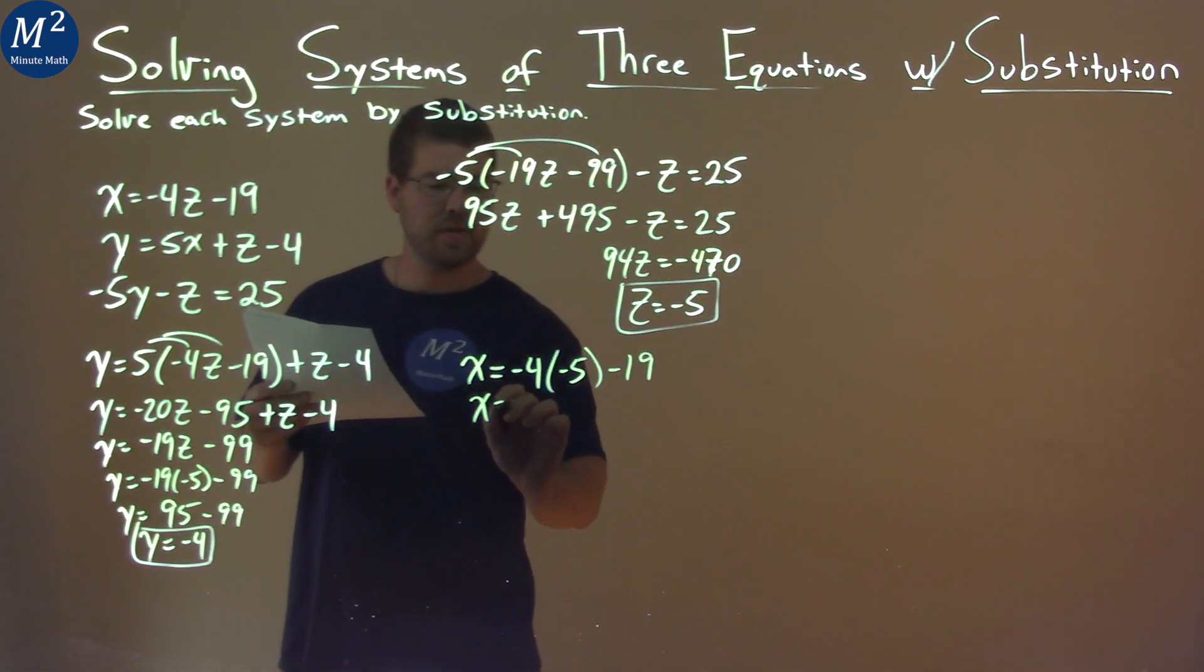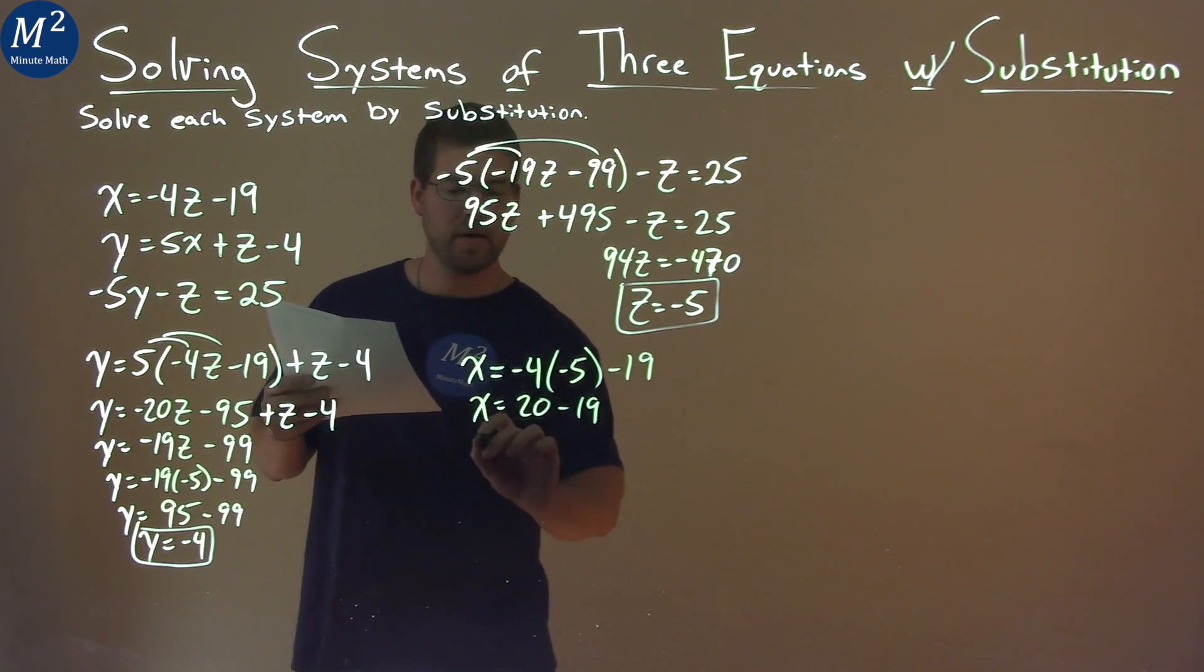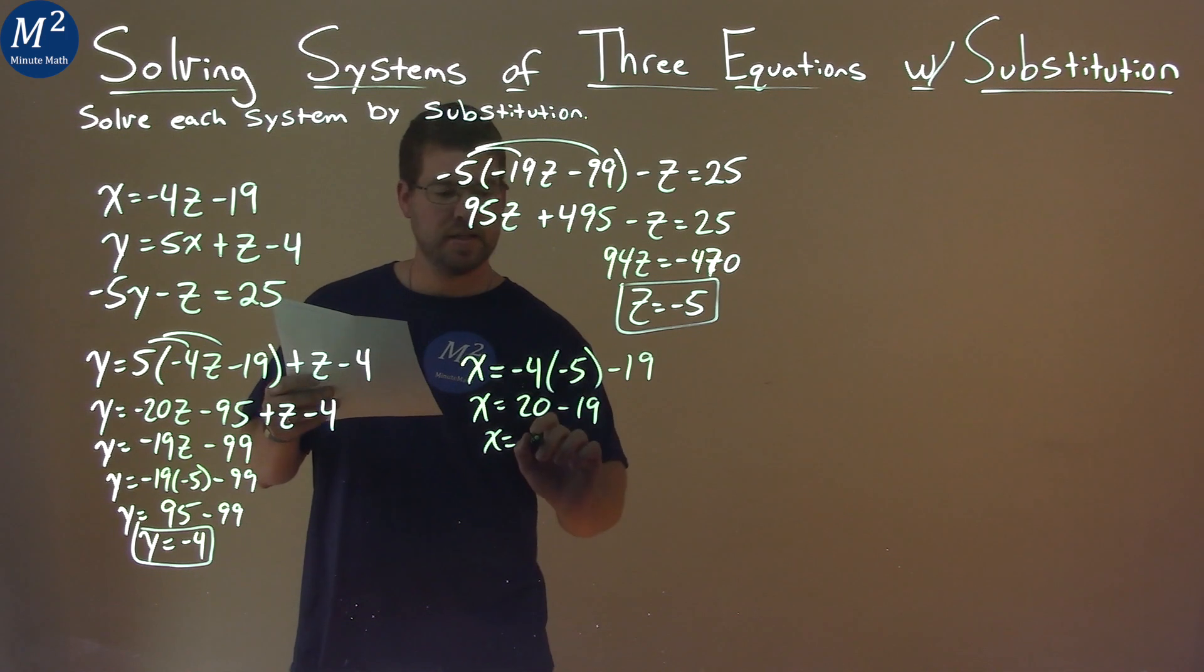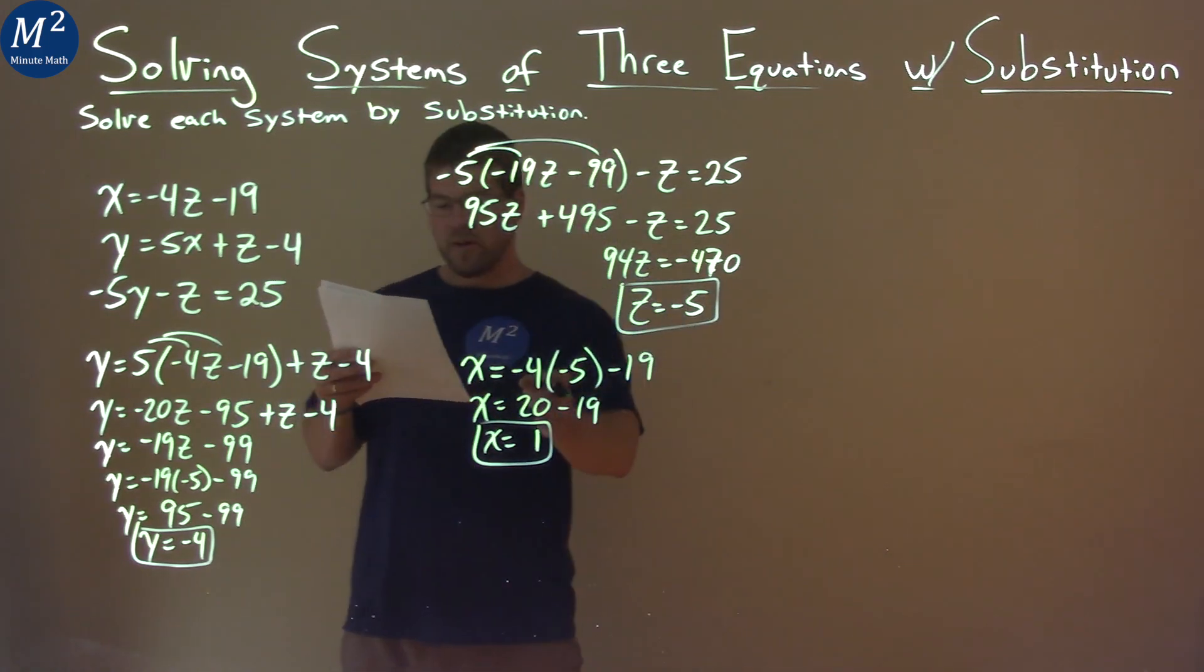Simplify that out. x equals negative 4 times negative 5 is positive 20 minus 19. And 20 minus 19 is positive 1.